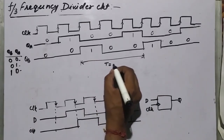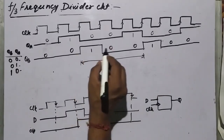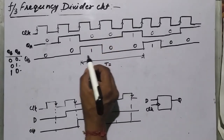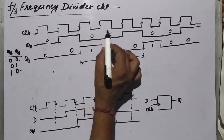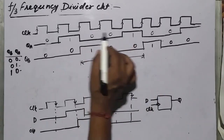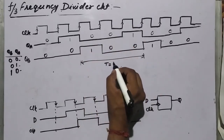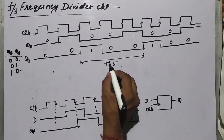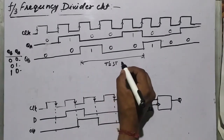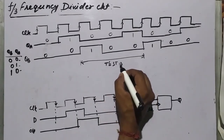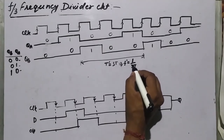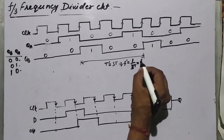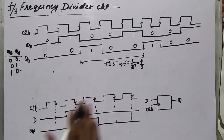Looking at the time period: T-dash equals 3T. So for the clock, each interval is T, giving a total period of 3T. This means f-dash equals 1 divided by 3T, which we can write as F/3.